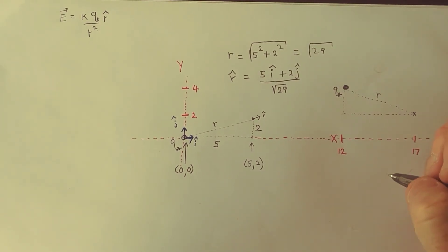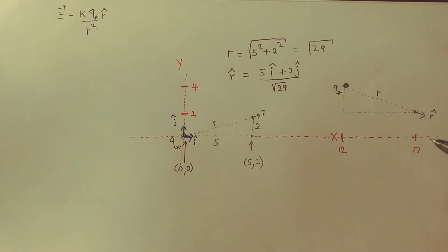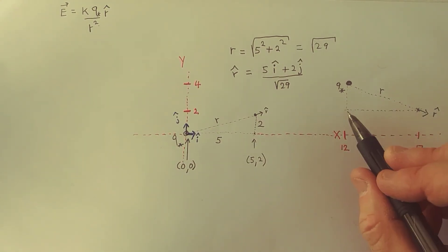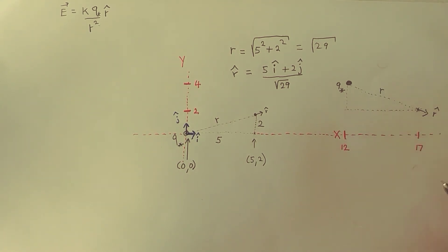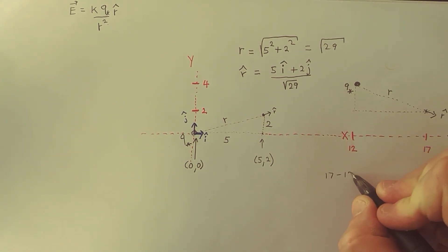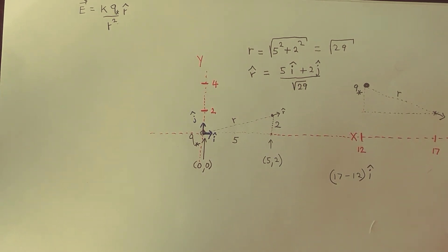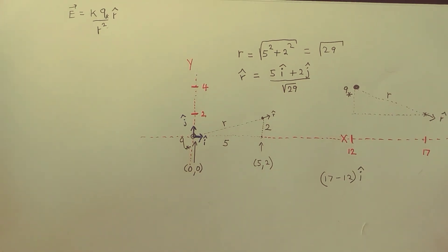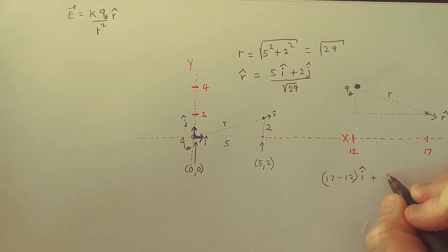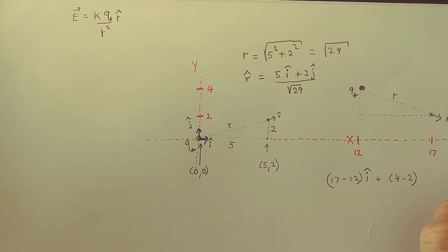So what does our unit vector look like in this case? It has to be a vector that's pointing that way with magnitude 1. Well what are the components? We are pointing horizontally by an amount which is 17 minus 12 in the horizontal direction, so it's associated with i hat. Sorry, take that back.